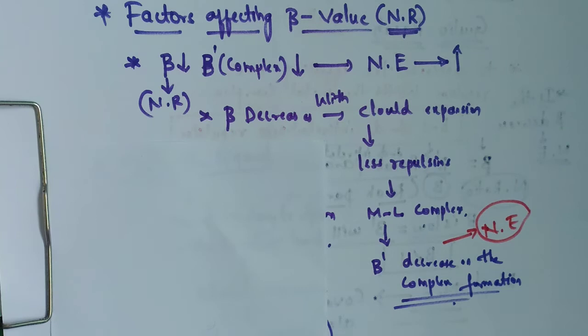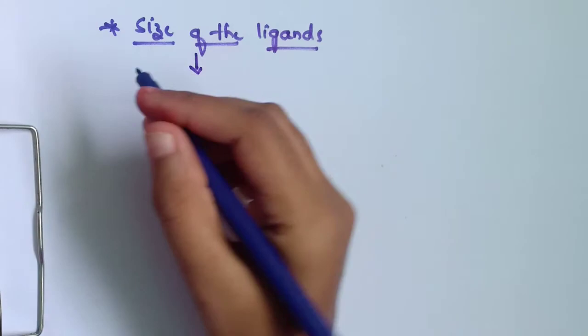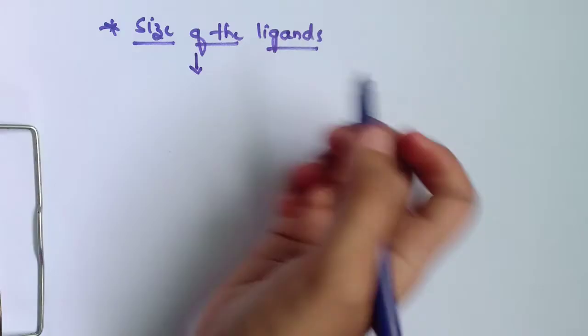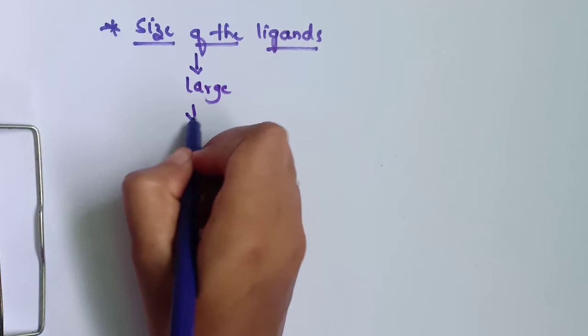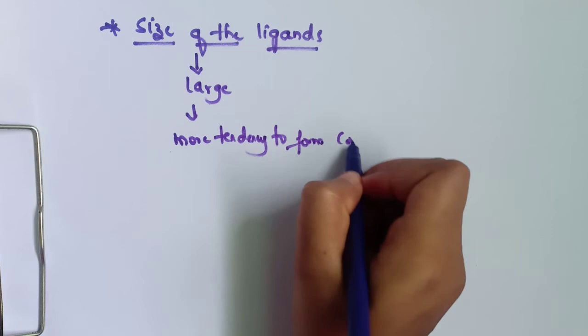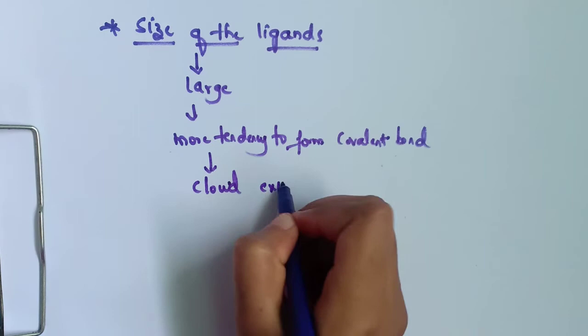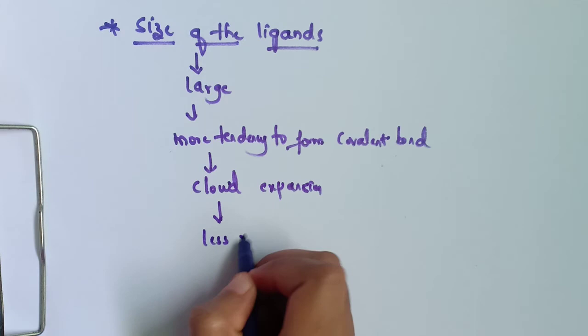The second factor affecting beta values is the size of the ligand. If the size of the ligand is large, there will be more tendency to form a covalent bond. More tendency for covalent bonding means cloud expansion takes place, and there will be less repulsion.